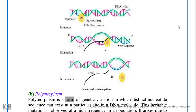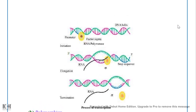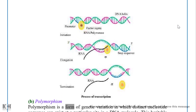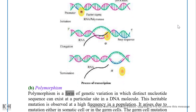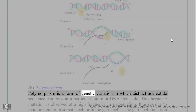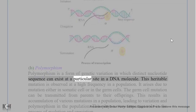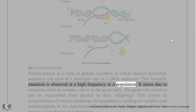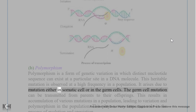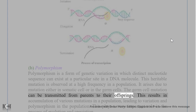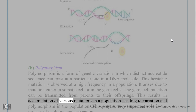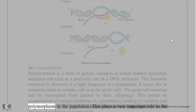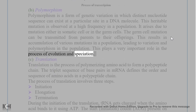B. Polymorphism: Polymorphism is a form of genetic variation in which distinct nucleotide sequences can exist at a particular site in a DNA molecule. This heritable mutation is observed at a high frequency in a population. It arises due to mutation either in somatic cells or in germ cells. Germ cell mutations can be transmitted from parents to offspring, resulting in accumulation of various mutations in a population, leading to variation and polymorphism. This plays a very important role in the process of evolution and speciation.